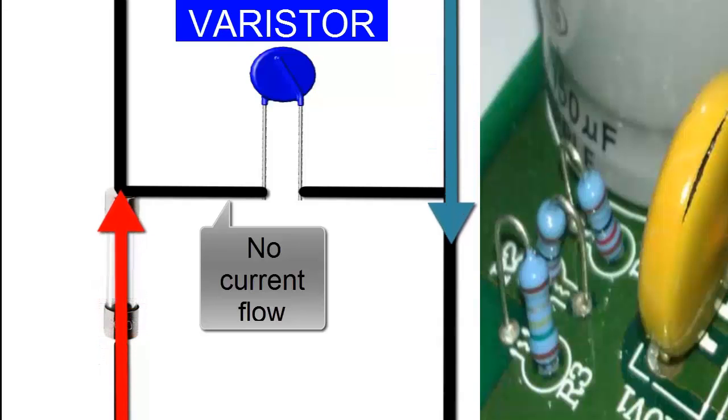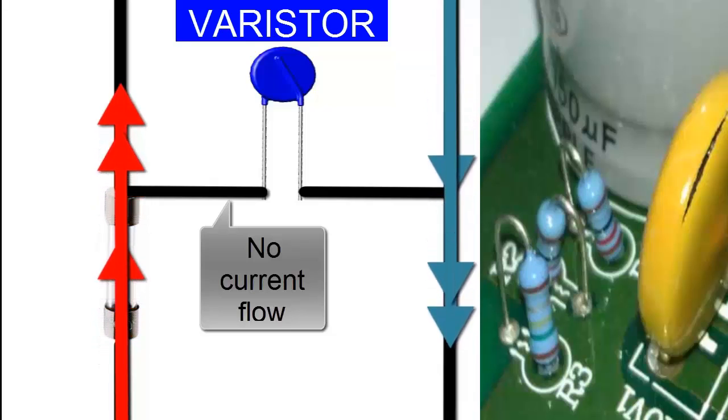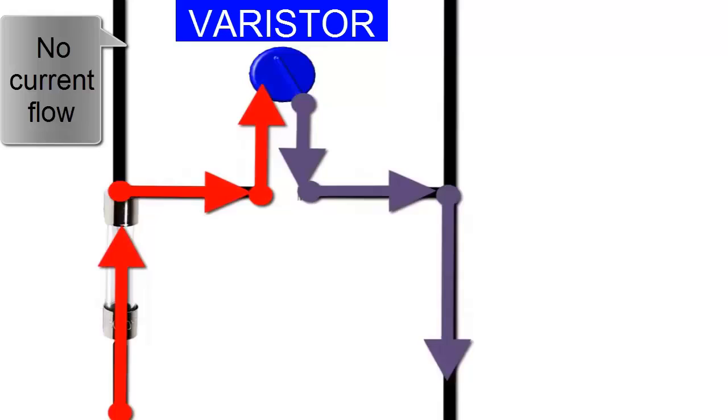The varistor is an essential component found on electronic boards, including those in air conditioners and refrigerators, designed to safeguard other elements against voltage spikes.